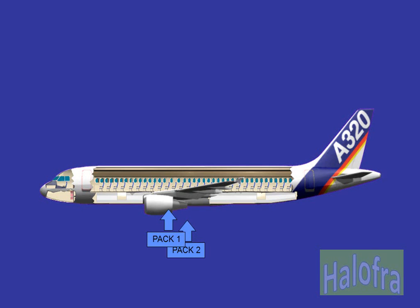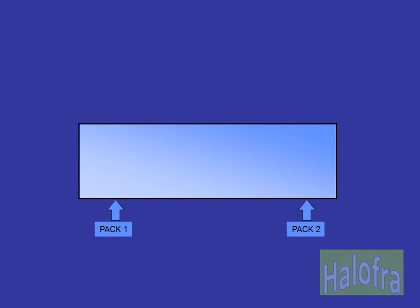The concept of the system is simple. Air is supplied from the air conditioning packs to the pressurized areas. An outflow valve is used to regulate the amount of air allowed to escape from the pressurized areas.